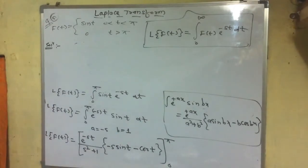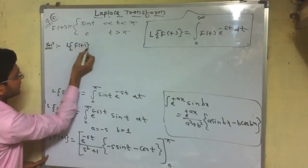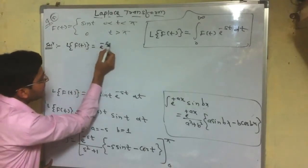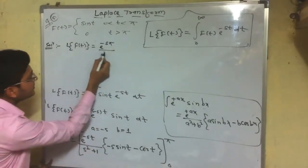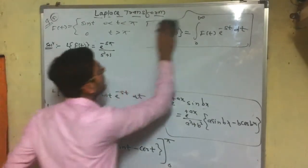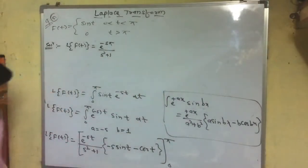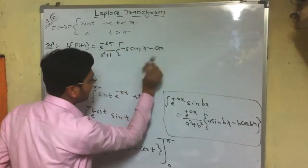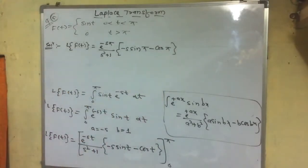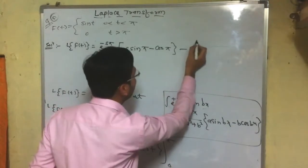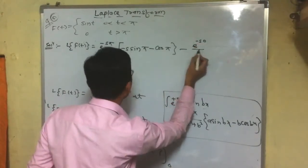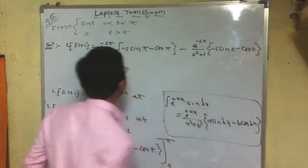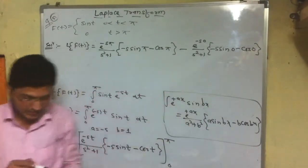Substituting the upper limit t = π: the expression gives e to the power minus sπ divided by (s² + 1), times [−s sin(π) − cos(π)]. Substituting the lower limit t = 0: e to the power 0 equals 1, divided by (s² + 1), times [−s sin(0) − cos(0)].